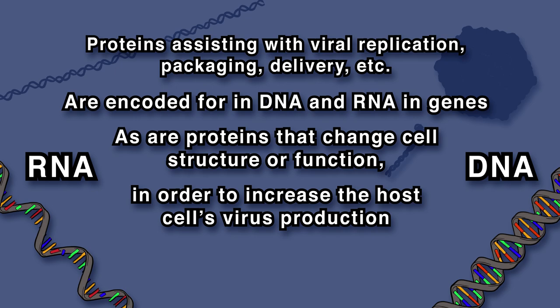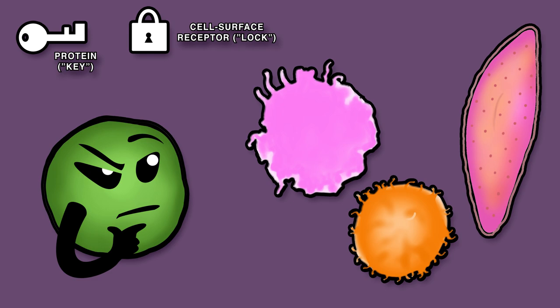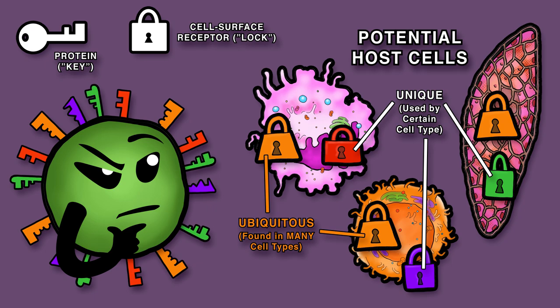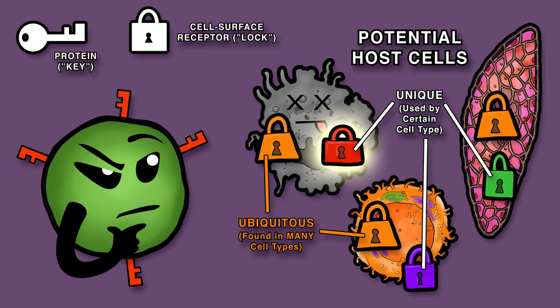Viruses attach to cell surface receptors of new host cells — ubiquitous or unique to cells in which the virus dwells. Viruses usually use one type of host cell receptor, though some viruses can trick more than one type of receptor.